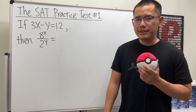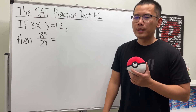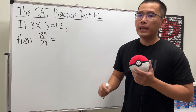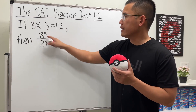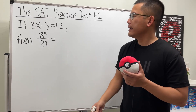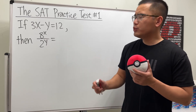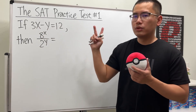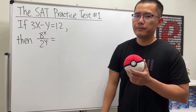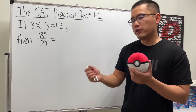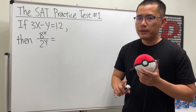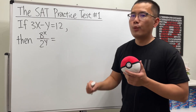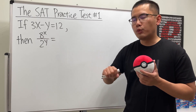Here we have a pretty interesting SAT algebra question. We are given that 3x minus y is equal to 12, and we are going to find out 8 to the x over 2 to the y. You might be wondering, do we really have enough information? Usually, shouldn't we be given two equations with two unknowns to solve both x and y? Well, not in this case, because we are just trying to get this expression — not what x or y is individually.